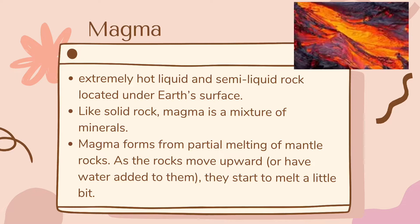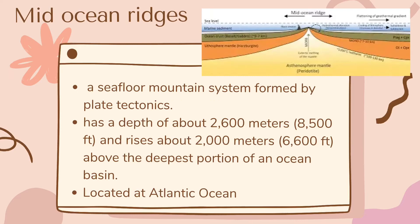Magma is extremely hot, liquid and semi-liquid rock located beneath the earth's surface. Like solid rock, magma is a mixture of minerals. Magma forms from partial melting of mantle rocks as the rocks move upward or have water added to them and they start to melt a little bit. Magma also contains small amounts of dissolved gases such as water vapor, carbon dioxide, and sulfur. The high temperature and pressure under earth's crust keep magma in its fluid state, and magma forced up through the crust forms new oceanic crust that piles up underwater in mid-ocean ridges.